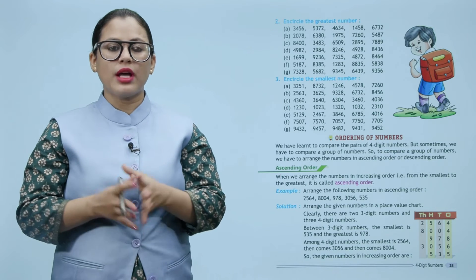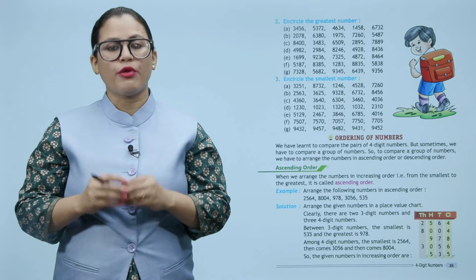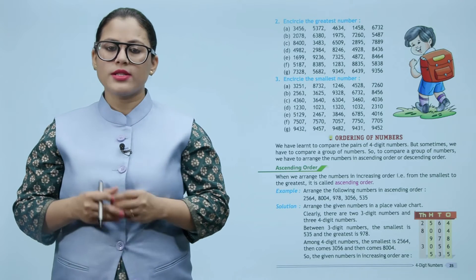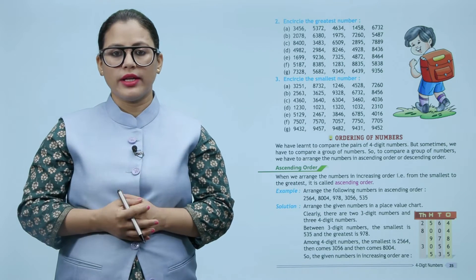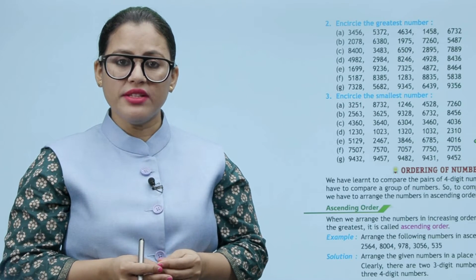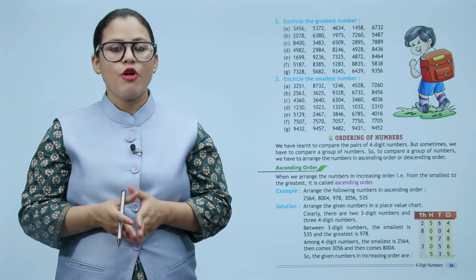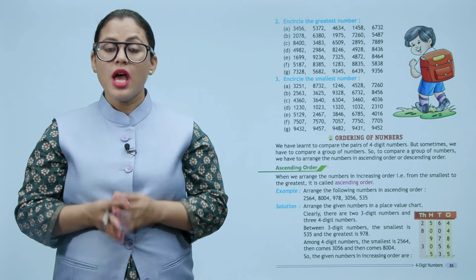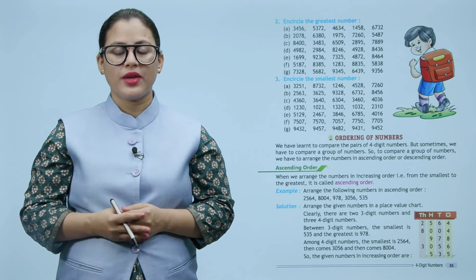Ordering of numbers. We have learned to compare pairs of four digit numbers, but sometimes we have to compare a group of numbers. To compare a group of numbers, we arrange them in ascending order or descending order. Ascending order: when we arrange the numbers in increasing order, that is from the smallest to the greatest, it is called ascending order.